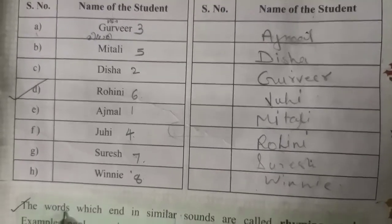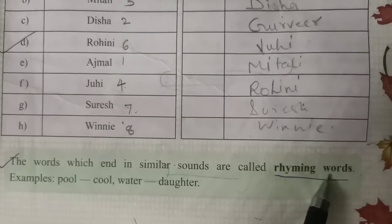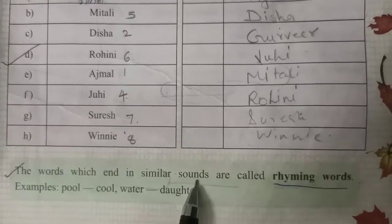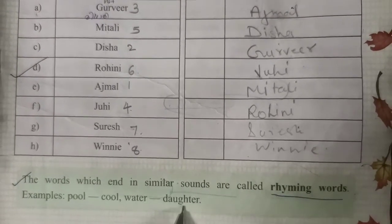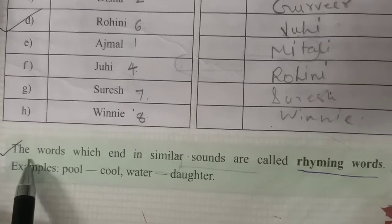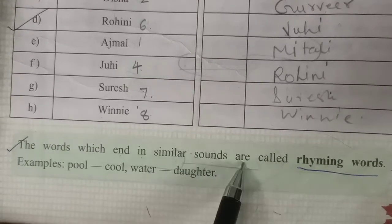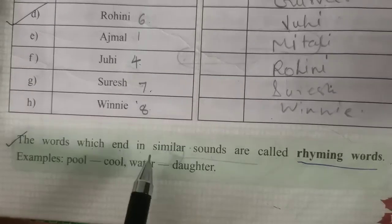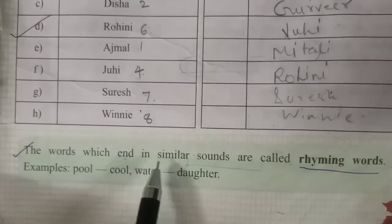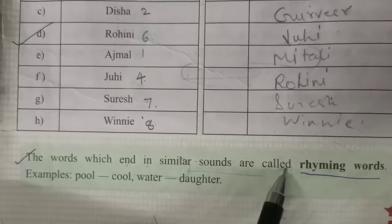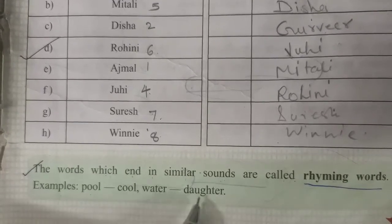The words which end in similar sounds are called rhyming words. For example: pool and cool rhyme; water and dotter rhyme. The words which end in similar sounds are called rhyming words.